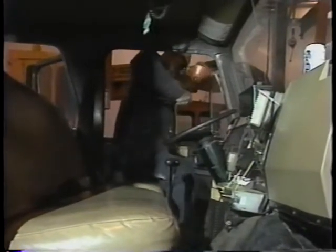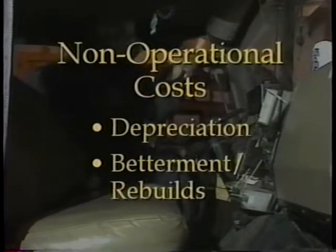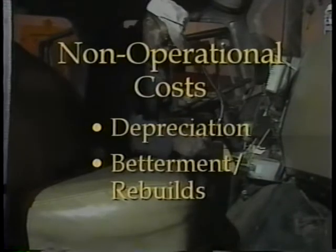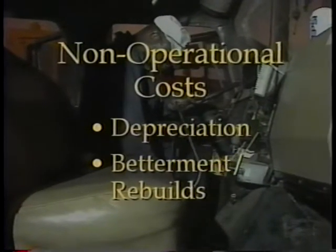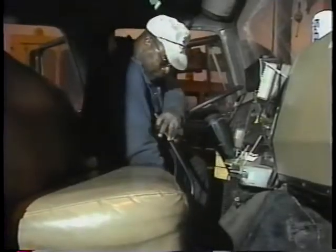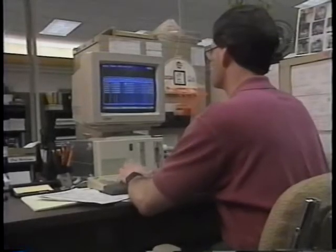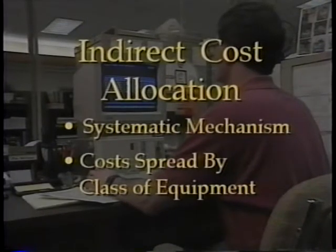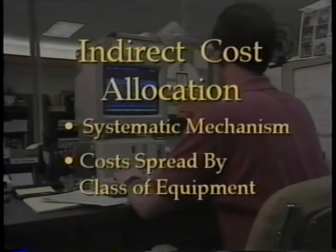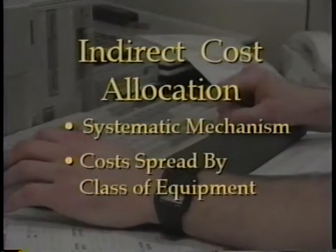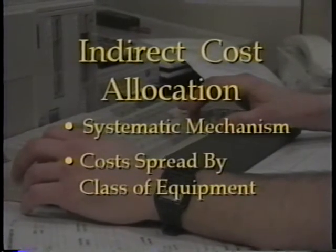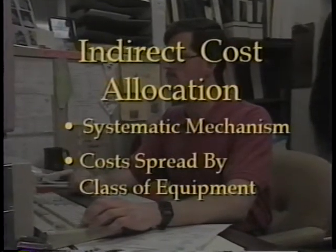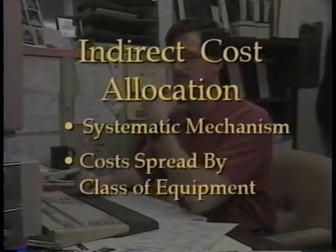Non-operational costs include equipment depreciation and capitalized equipment betterment or rebuild costs. Equipment depreciation would be charged to equipment units on the basis of charges from equipment asset accounts. The final key element of the cost accounting system is a systematic mechanism for allocating indirect costs to specific units or classes of equipment, where indirect costs are those not charged directly to individual units.